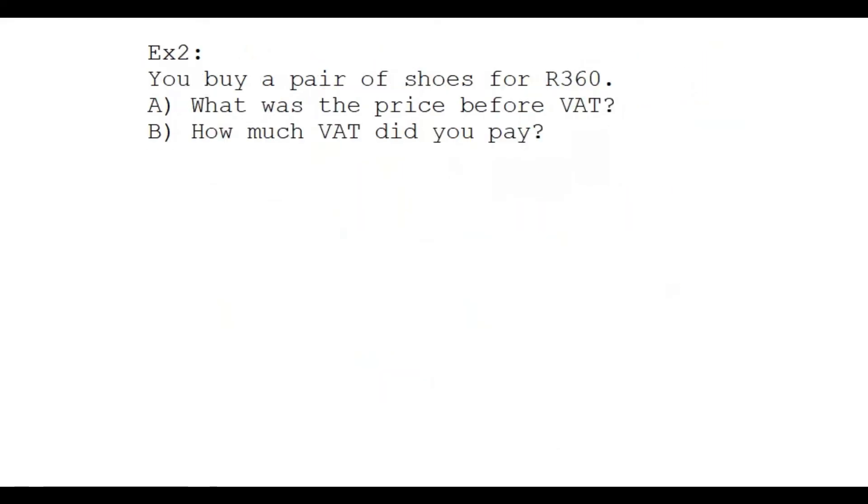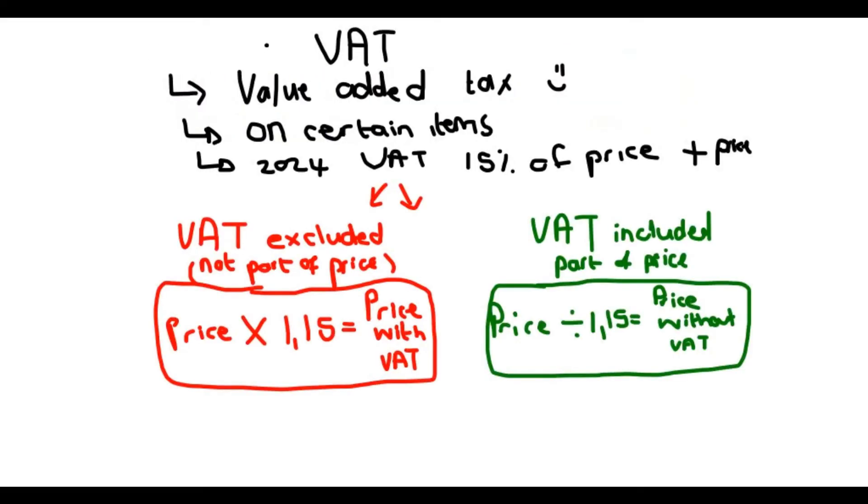Last example: you buy a pair of shoes for R360. There's my pair of shoes. I've actually decided just to go with like a sandal. What was the price before VAT? That is already included in this price. Do you understand? What was the price before they added VAT?